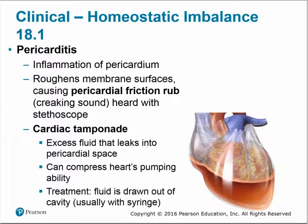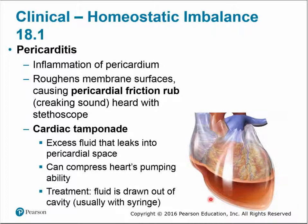Homeostatic imbalances with these coverings include pericarditis, which is inflammation of the pericardium. This can cause roughening of the membrane surface and a friction rub heard as a creaking sound with a stethoscope. Cardiac tamponade is where excess fluid leaks into the pericardial space, compressing the heart's pumping ability — all that fluid pressing around the heart prevents it from fully contracting. Treatment requires drawing the fluid out of the pericardium with a syringe.